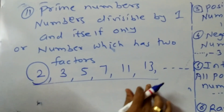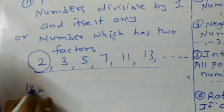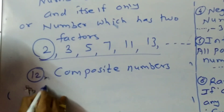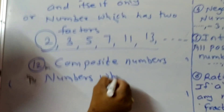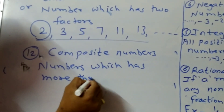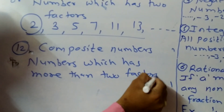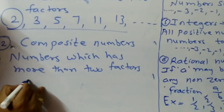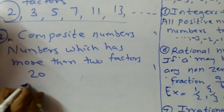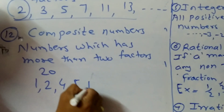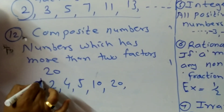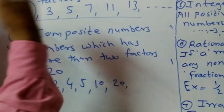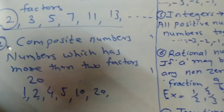The next type is composite numbers — numbers which have more than two factors. In prime numbers the numbers have only two factors, but composite numbers have more than two factors. For example, take 20: its factors are 1, 2, 4, 5, 10, and 20, meaning 20 is divisible by 1, 2, 4, 5, 10, and 20. Since it has more than two factors, 20 is a composite number.